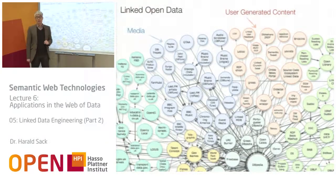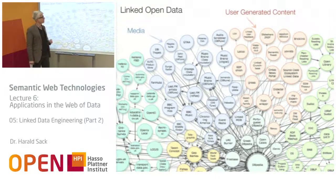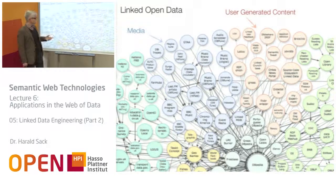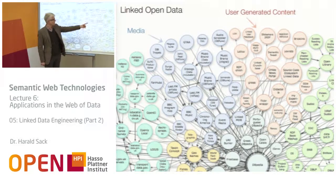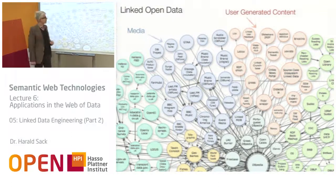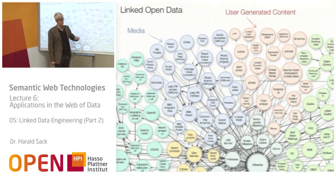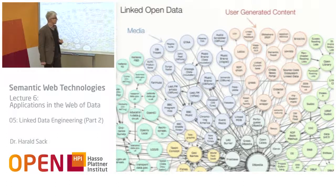Let's look again at the Linked Open Data Cloud with categories made visible by different colors. For example, the blue color stands for media data or multimedia data. You will find here the BBC database, BBC program data, BBC music data, MusicBrainz and so on. The orange part is user-generated content — for example, SlideShare or Visto, the video search portal with more than 10,000 educational videos.